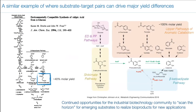Another example near and dear to my heart is the beautiful work in the mid-1990s from Karen Draths and John Frost, who showed you can take glucose through protocatechuic acid via the shikimate pathway to produce muconic acid, and then hydrogenate it to adipic acid in a more environmentally friendly way. However, the molar yield from glucose is theoretically only about 40%. If instead you start with aromatics derivable from corn bran and corn stover in industrially relevant ways today, you can go to muconate at essentially 100% yield. As a community we need to keep scanning the horizon for new substrates as they come on board to realize bioproducts at much higher yields.